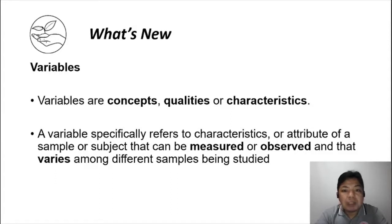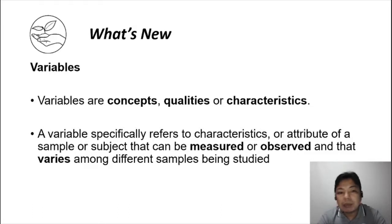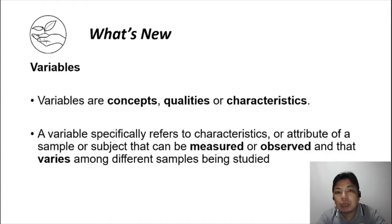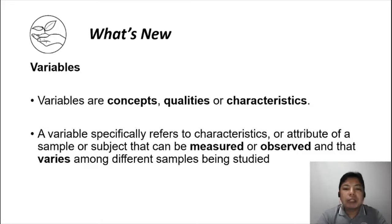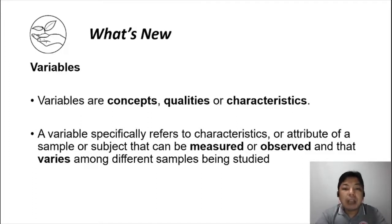Another definition: a variable specifically refers to characteristics or attributes of a sample or subject that can be measured or observed, and that varies among different samples being studied. Variables are the characteristics that we actually measure, and they differ from one subject to another. For example, if you are doing research about a group of students, you are measuring their age, place of birth, and academic performance. Student one can have a different grade from student two, three, and four.